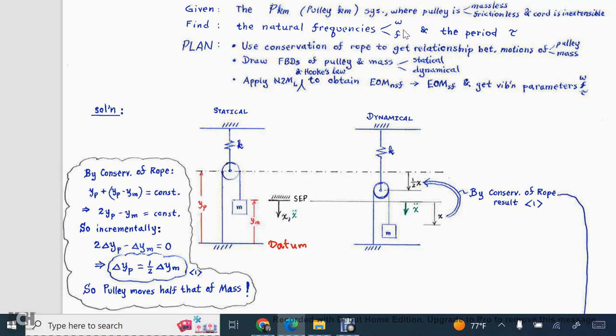We would like to find the natural frequencies omega and f, as well as the corresponding period tau. To kick a problem off like this, it would be really helpful if you can establish how the moving elements are moving with respect to one another. In this case, we have a pulley and the mass that are both moving.